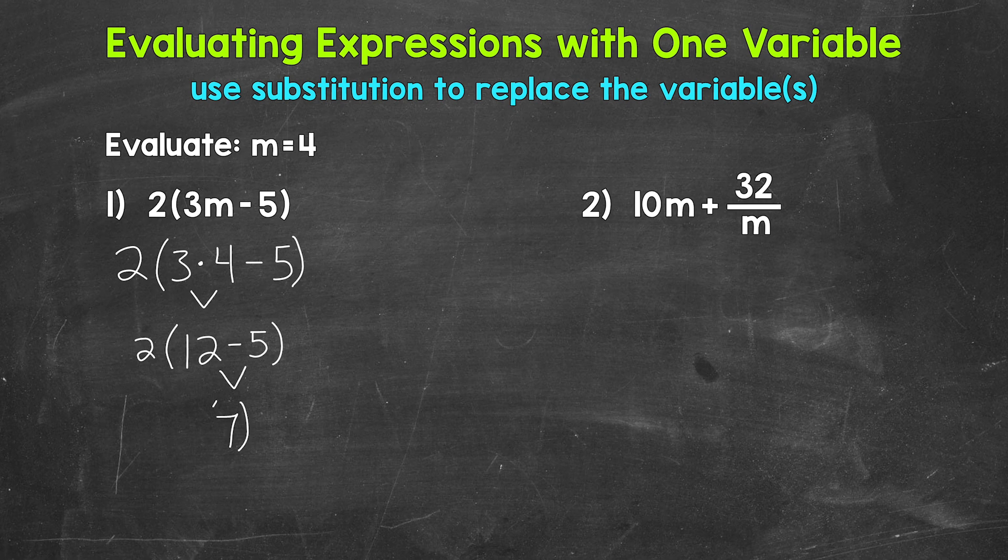I will keep 7 within parentheses and bring down the 2 we did not use. So we have a 2 next to a 7 in parentheses. That means we are multiplying, so we end with 2 times 7, which equals 14. The value of this expression is 14 when m equals 4.